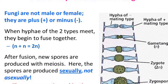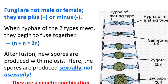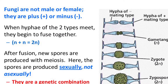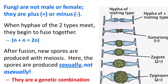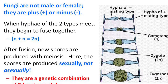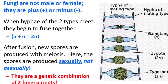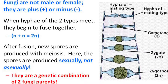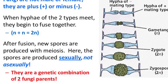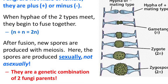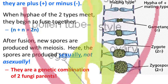So quite simply, what happens is this: hyphae from two different fungi join together. They then form a zygote, and it has double the number of chromosomes. So what it has to do is undergo meiosis — cell division — and then it produces spores. The spores have a single set of chromosomes and they're released into the air.